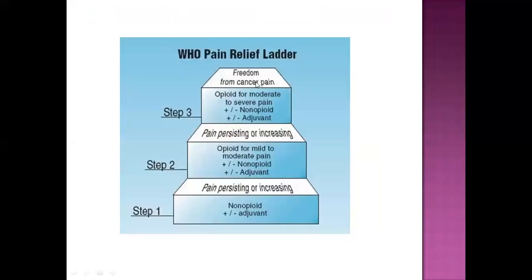We have the WHO pain relief ladder, which is very important for understanding pain management. At each step, pain is persisting or increasing. For mild pain: non-opiates with or without adjuvants. For mild to moderate pain: opiates for mild to moderate pain, with non-opiates and adjuvants as optional. For moderate to severe pain: stronger opiates, non-opiates, and adjuvants can all be used. This is the WHO pain relief ladder.